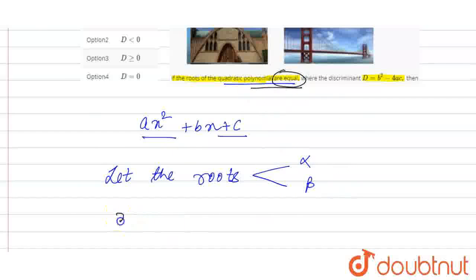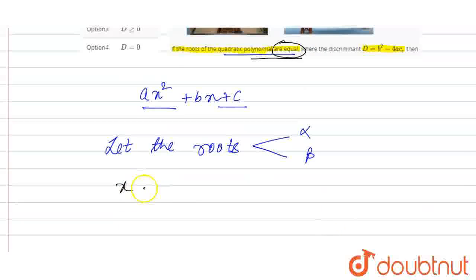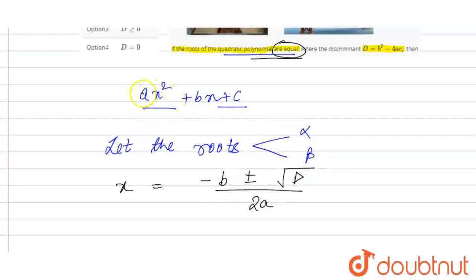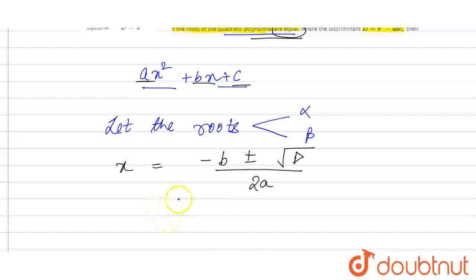According to this formula, x is equal to minus b plus minus under root d upon 2a, where d is discriminant, where a is the coefficient of x square, b coefficient of x and c is the constant. So, if we see, for: